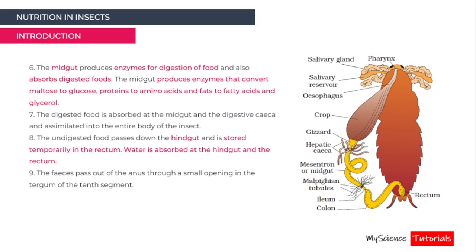The midgut produces enzymes for digestion and absorbs digested foods. It converts maltose to glucose, proteins to amino acids, and fats to fatty acids and glycerol — breaking down complex carbohydrates, proteins, and fats into their monomer forms. The digested food is absorbed at the midgut and digestive caeca and assimilated into the body. Undigested food passes to the hindgut and is stored temporarily in the rectum. Water is absorbed at the hindgut and rectum, and faeces pass out through the anus.